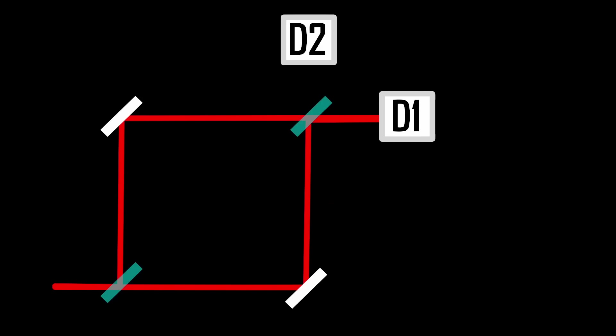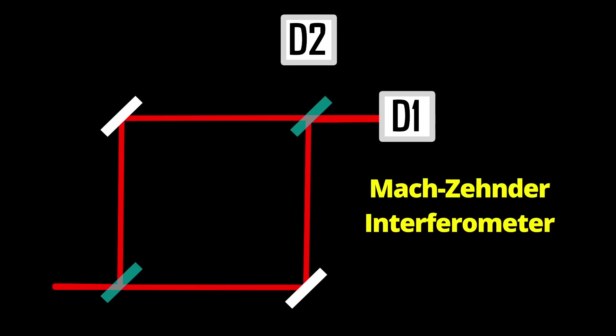Then you recombine the beams using two mirrors and the second beam splitter. And you put two detectors at the two possible output directions. I'll call them detector one and two. This entire setup is known as a Mach-Zehnder interferometer.